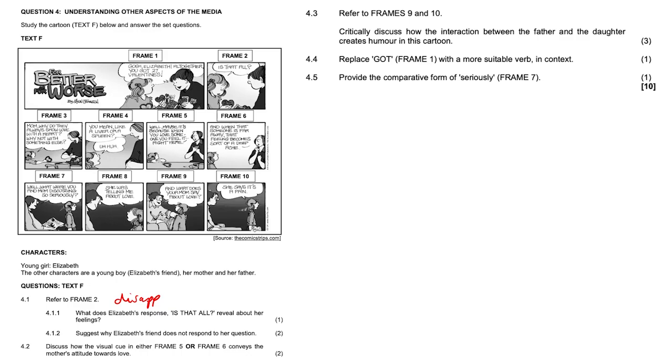Why Elizabeth's friend does not respond to her question? So the friend there in frame 2, the friend is just shocked, she's astonished, dumbfounded, taken aback by Elizabeth's arrogance here, her sense of entitlement, her lack of gratitude. You got 27 valentines.